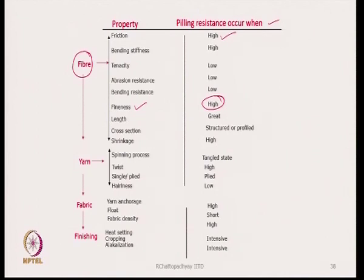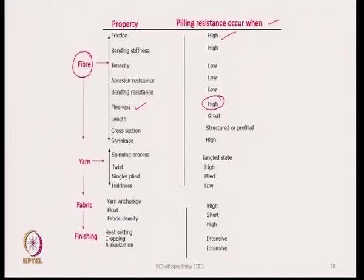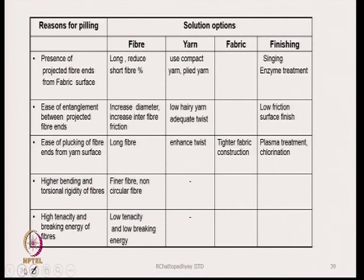This is the output of design research: a designer writes how peeling resistance can be improved by manipulating fiber parameters, yarn parameters, fabric parameters, and finishing parameters. It is not only a list of parameters — it also states how these parameters should be changed. If one wants to increase peeling resistance, the table indicates what should be done with each parameter, showing whether properties should increase or decrease.